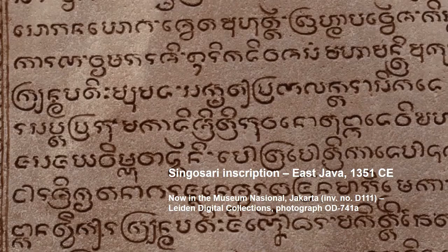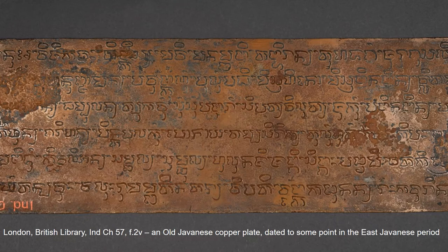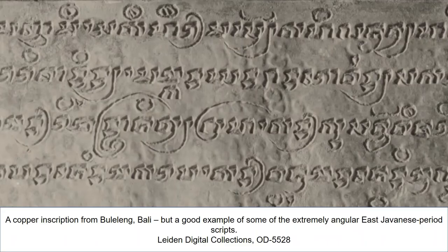Skipping forward a few centuries, we have the Singosari inscription, probably based on an inked script using a reed pen on Nipa leaves. It's in the Museo Nacional in Jakarta and has a quite lovely, elegant script, all on a beautiful straight line. Then we have a copper plate in the British Library, probably 12th or 13th century. And this one from Bali is a very good example of the extremely angular scripts from the East Javanese period on copper plates — very chiseled in appearance, looking like it was created by a machine. I find it very difficult to read, and I feel like that may have been the point.